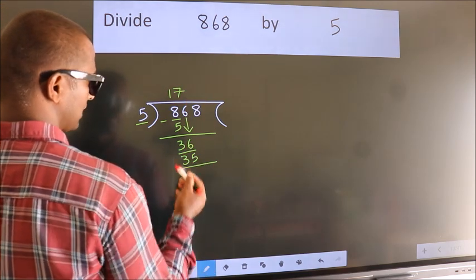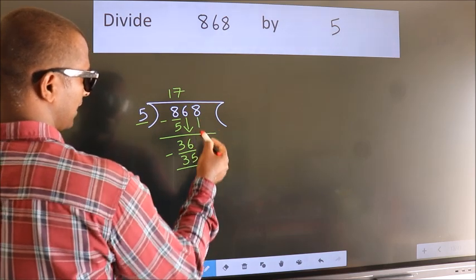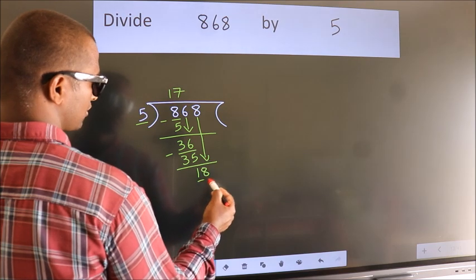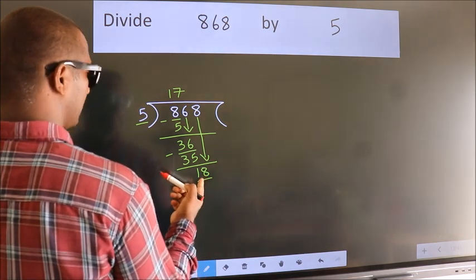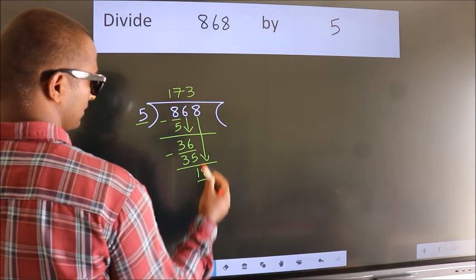Now we subtract. We get 1. After this, bring down the next number. So 8 down, giving us 18. A number close to 18 in the 5 table is 5 times 3, which is 15.